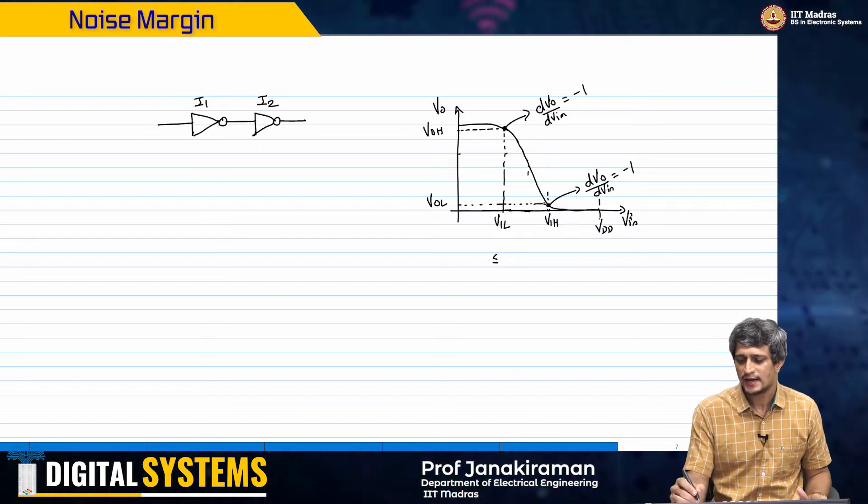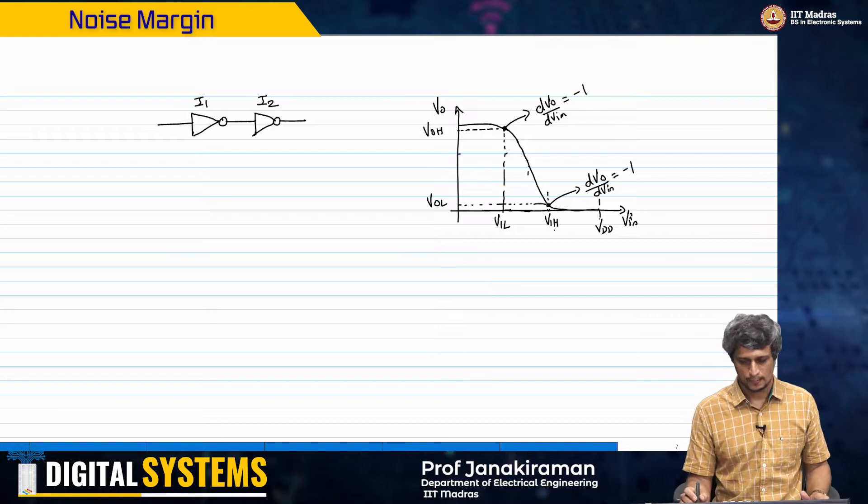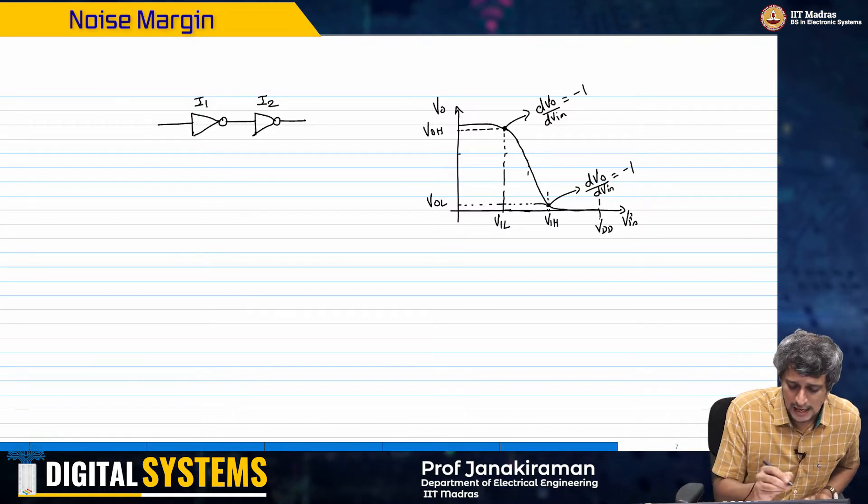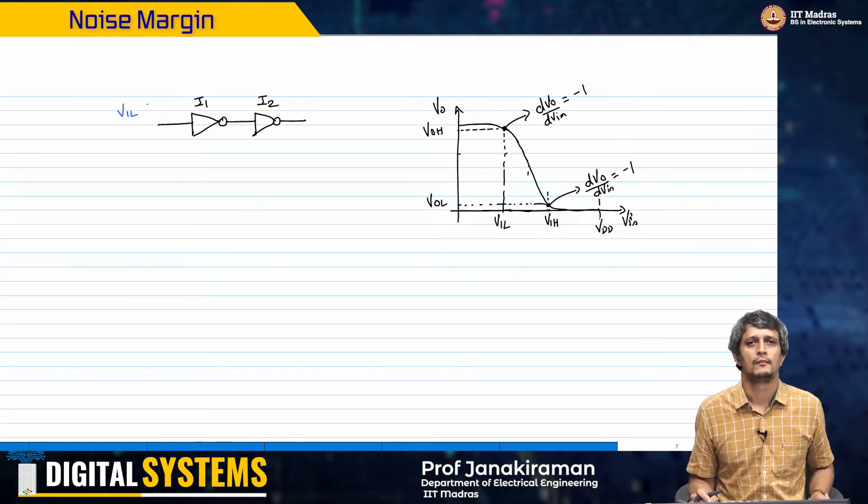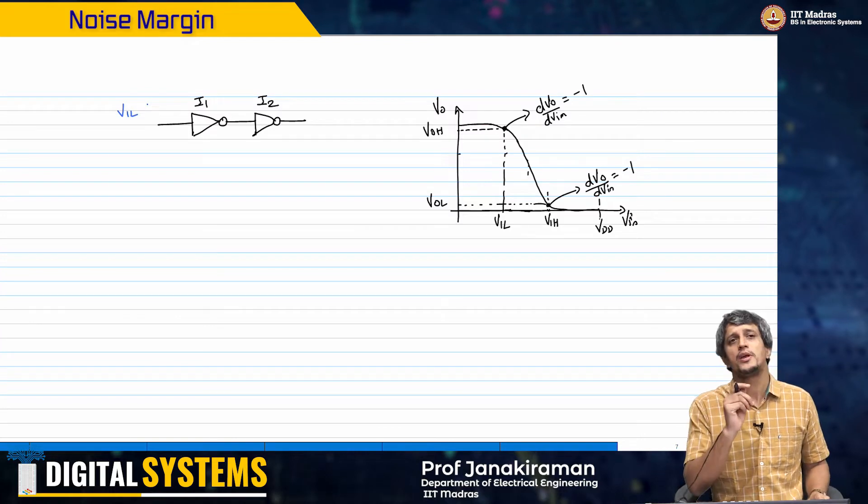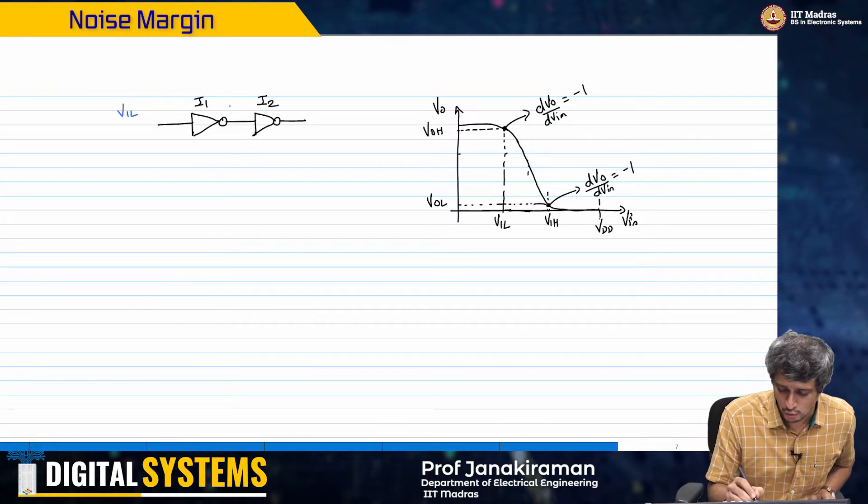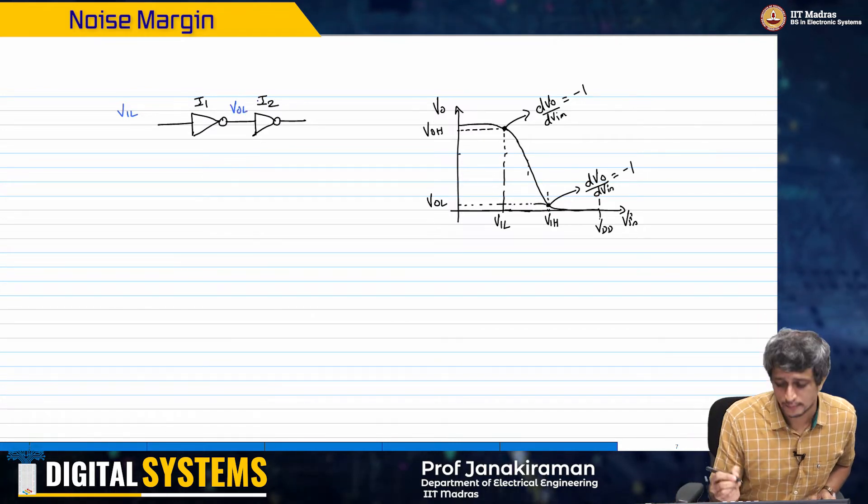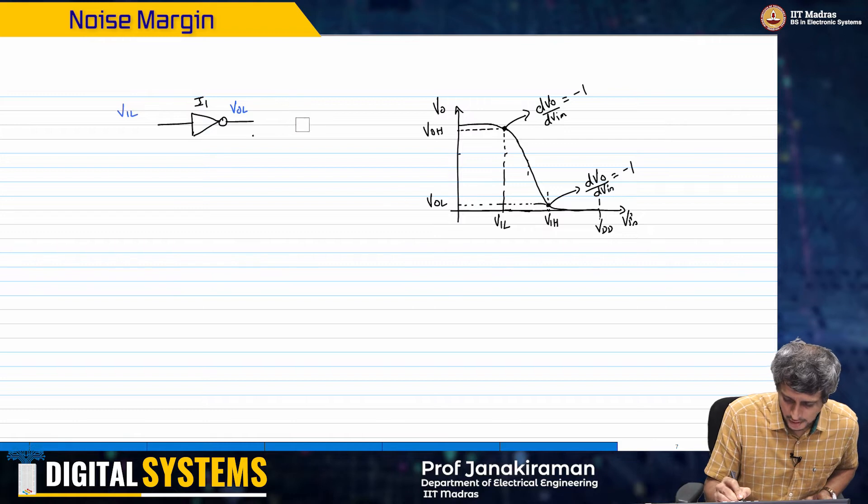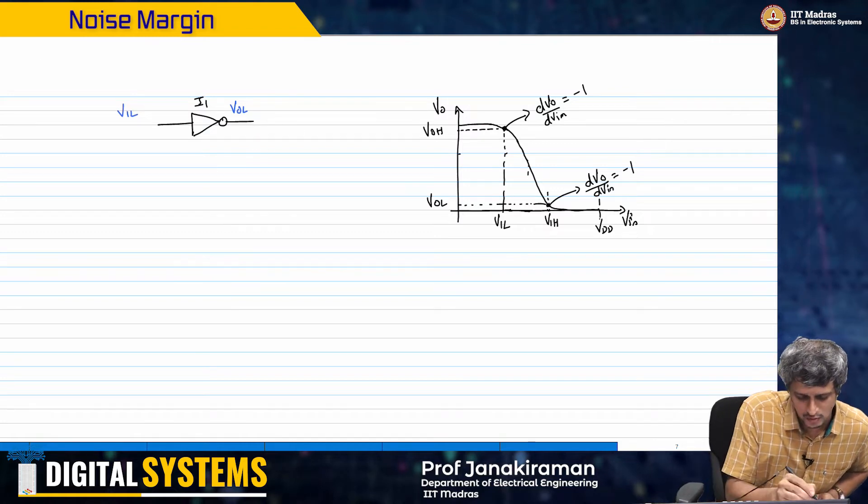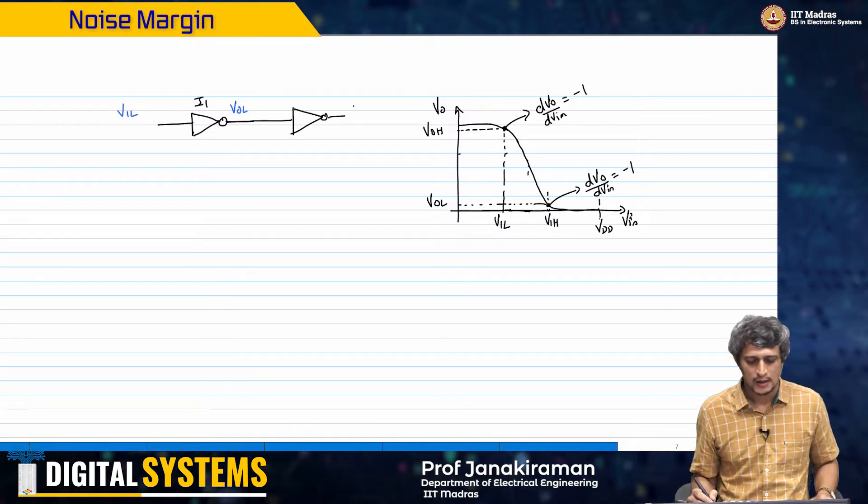Here is my voltage transfer characteristic. We just have VIL, VIH, VOL and VOH here. So let us assume that I give VIL as my input to I1.